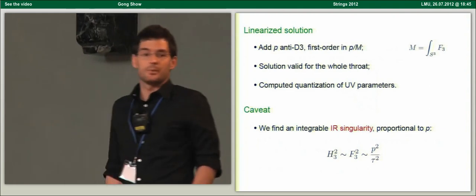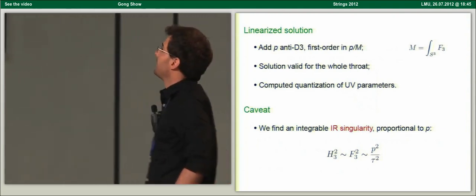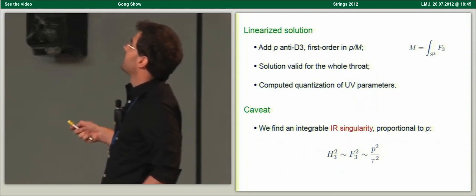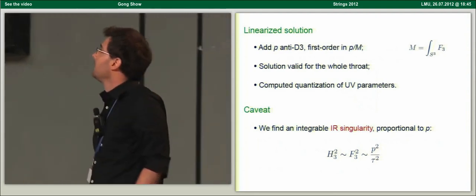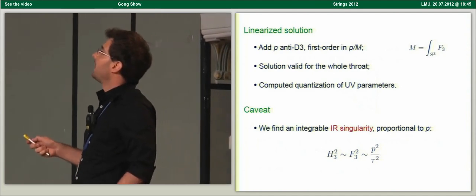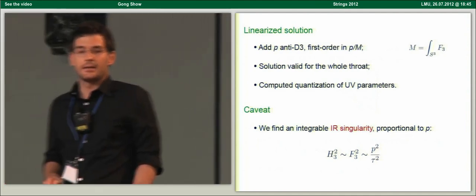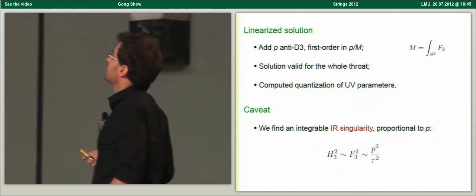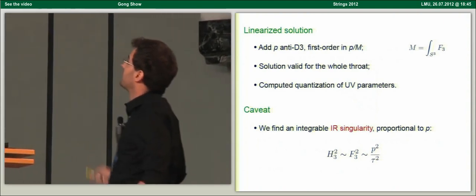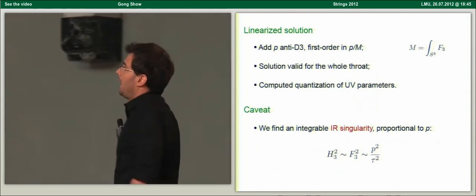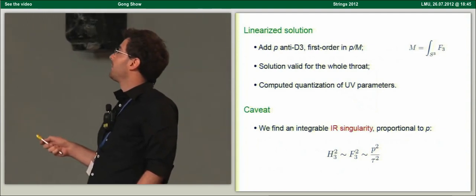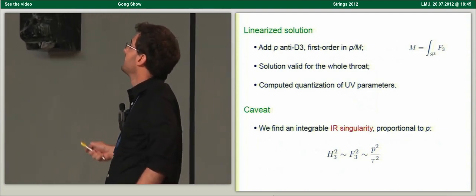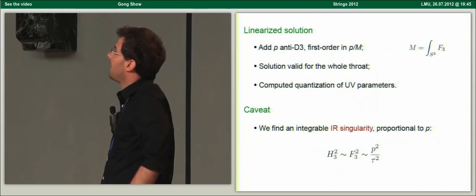From the probe analysis of Kachru-Pearson and Verlinde, we expect that when this parameter is small, there should exist a metastable NS5 brane state in this setup. We found a solution that is valid for the whole throat, connecting the IR and UV regions, and were able to explicitly compute the quantization of all the ultraviolet parameters. However, we find that this solution has an integrable infrared singularity proportional to the number of anti-branes in the energy densities of the three-form fluxes.